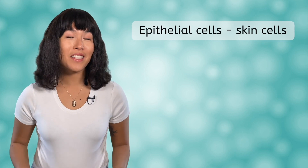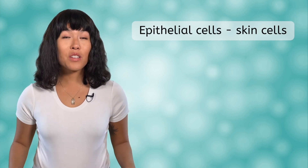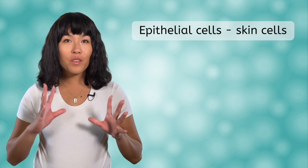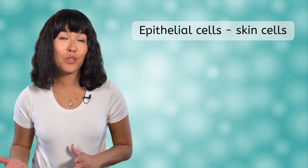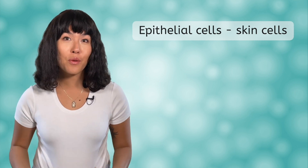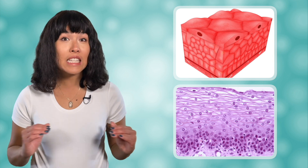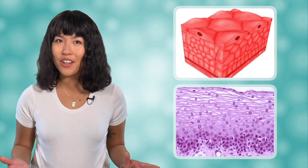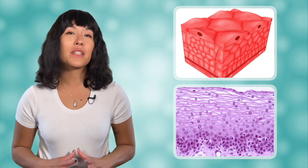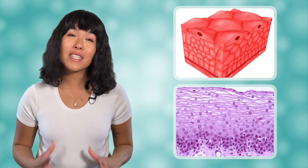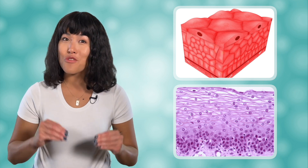Epithelial cells are your skin cells. These cells line all the internal and external surfaces of your body. They are tightly packed and form sheets or layers. These layers help to protect the various tissues and structures in your body.